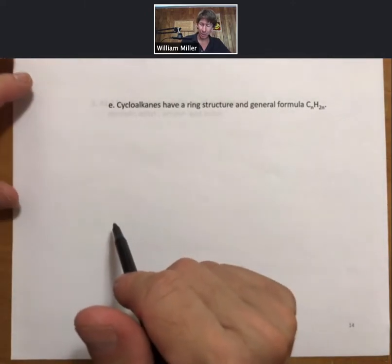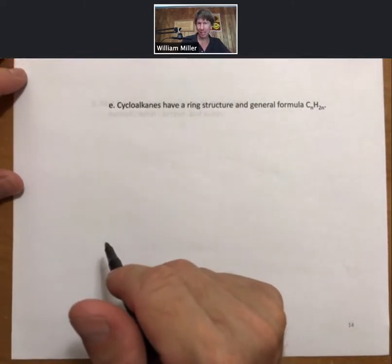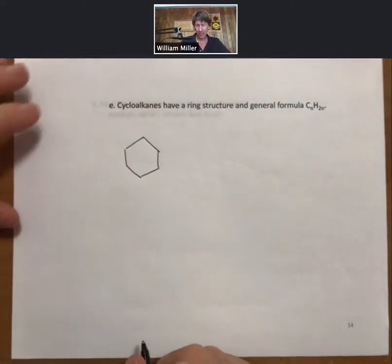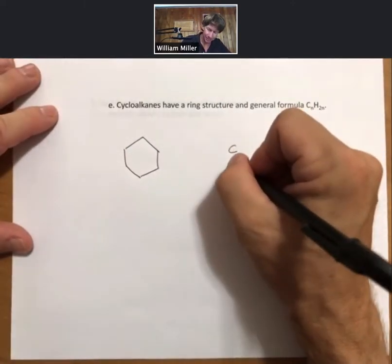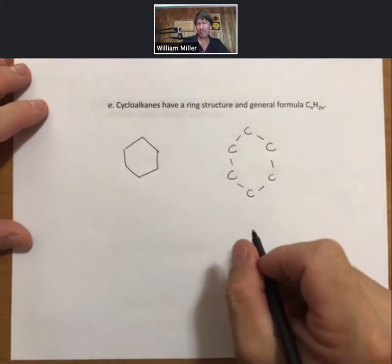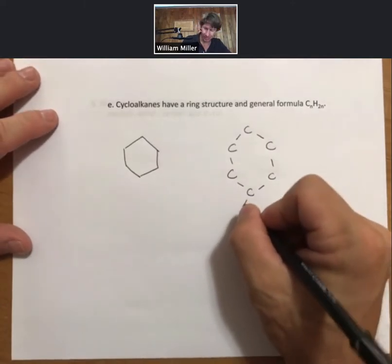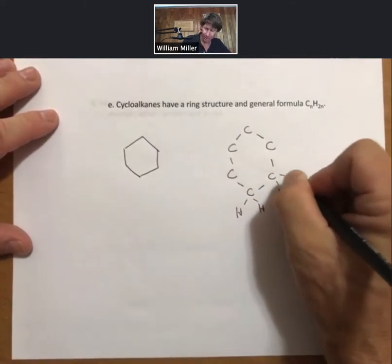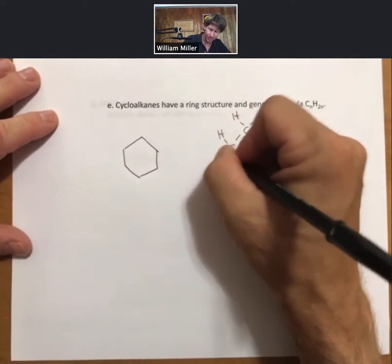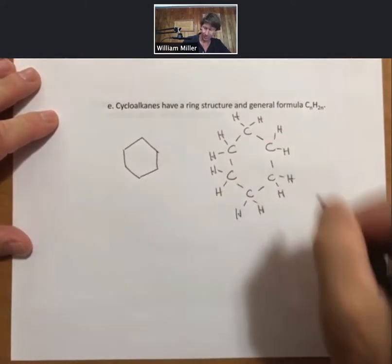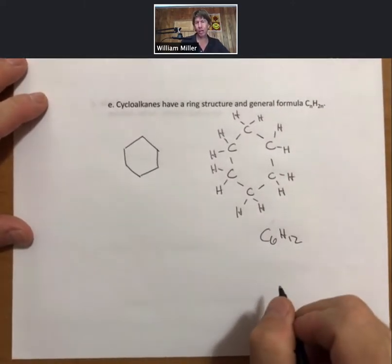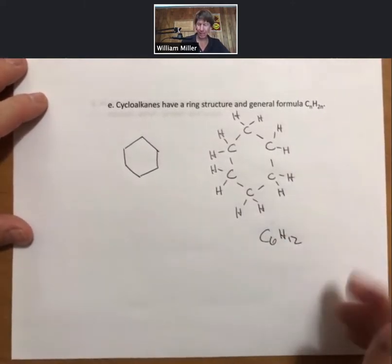Cycloalkanes have a ring structure and a general formula of CnH2n. This is a six-member ring. Here is a six-member ring as well. We will fill in each of these carbons until it has four bonds. And we will see that there are C6H12, so Cn to H to the 2n.